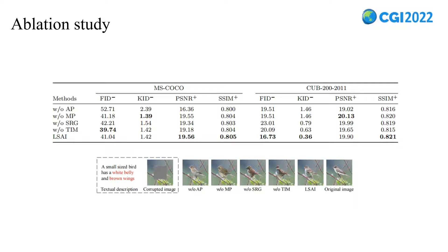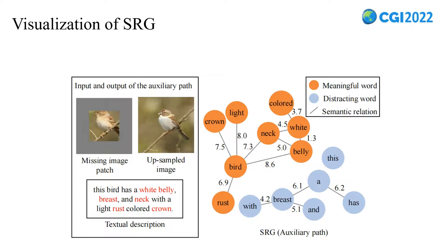As for ablation study, we conduct ablation experiments on CUB-200-2011 and MS-COCO to evaluate the effectiveness of each novel component. From the table, we can observe that LSAI tops most metrics compared with other variation methods. As shown in the figure, the MP module and SRG module are vital to the reality and semantic consistency of the restored images. To evaluate the semantic relation graph, we visualize the SRG in the auxiliary path at the end of training. The meaningful words and distracting words are regularized relative to each other, making it easy to extract meaningful words describing the missing image patch from the guiding description.